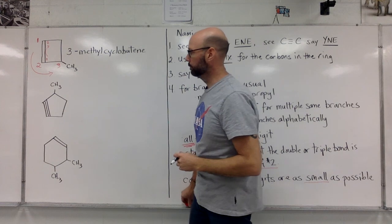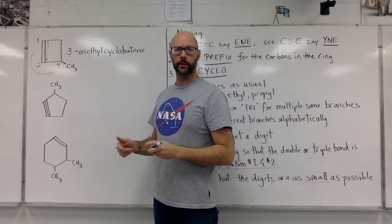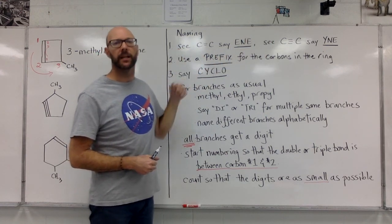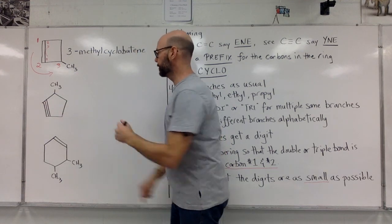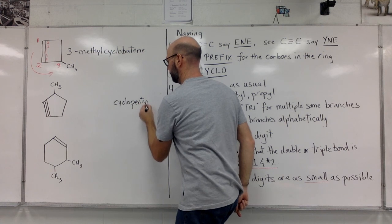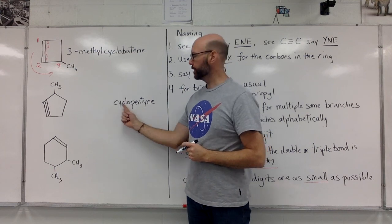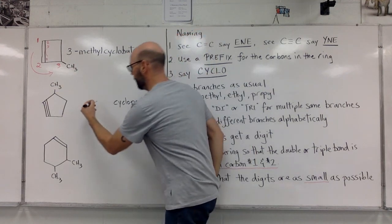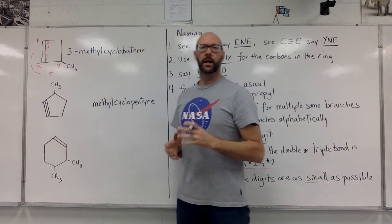The next example also has a methyl on it, but this time it's a five-carbon ring with a triple bond. There's a triple bond, there are five carbons, and it makes a ring. Ignoring the methyl for a second — a five-carbon ring with a triple bond is cyclopentyne. This is a one-carbon branch, so it's methyl. Methyl cyclopentyne.